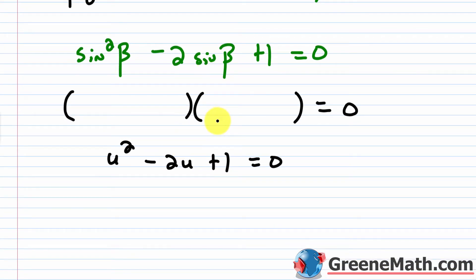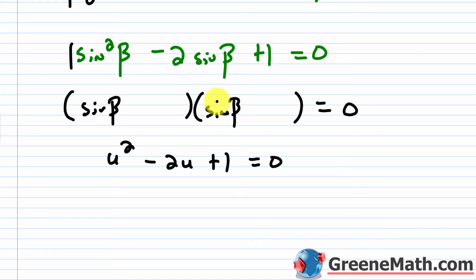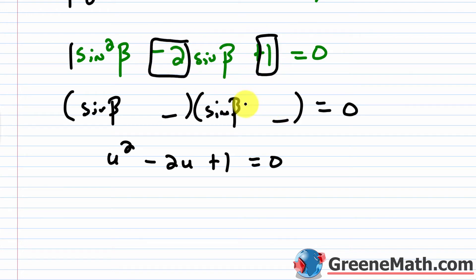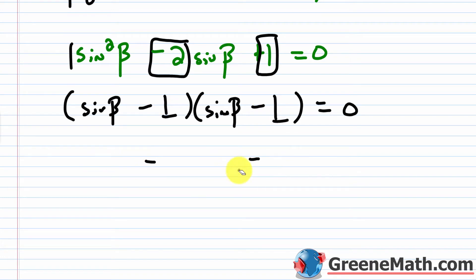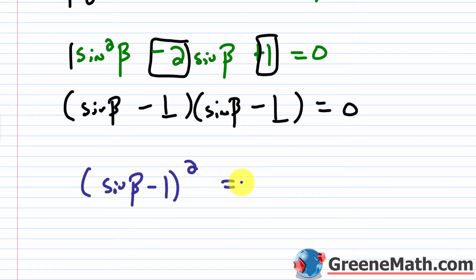Factoring: we need two numbers that multiply to positive 1 and sum to negative 2, which gives negative 1 and negative 1. So this factors as (sine of beta minus 1) quantity squared equals 0. This is a perfect square, so there's only one unique solution — it's a duplicate root.